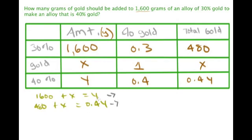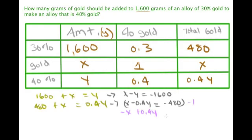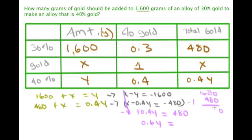Rearranging with variables on one side: x minus y equals negative 1600, and x minus 0.4y equals negative 480. Multiplying the second equation by negative one gives negative x plus 0.4y equals 480. Adding the two equations, the x's cancel, leaving negative y plus 0.4y, which is negative 0.6y, equal to negative 1600 plus 480, which is negative 1120.